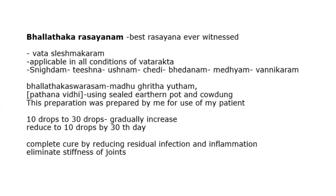There are two or more types of Phalladhi Rasayana. The preparation used here was prepared by the speaker for use with patients and is not available in the market. Dosage: 10 to 30 drops, gradually increasing, then reducing back to 10 drops by the 30th day. Complete cure by reducing recidival infection and inflammation is the result.